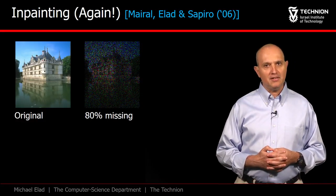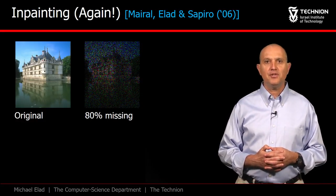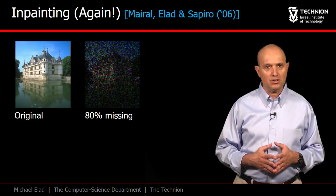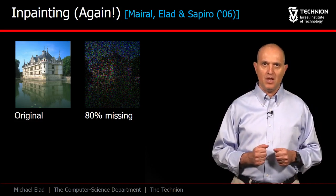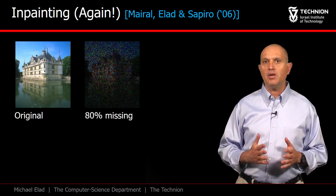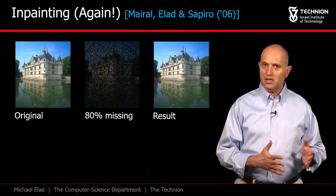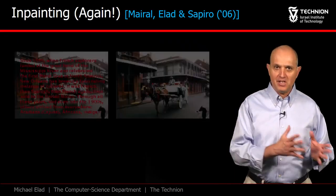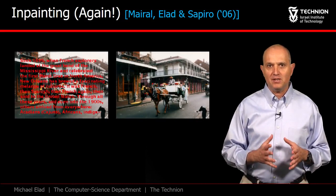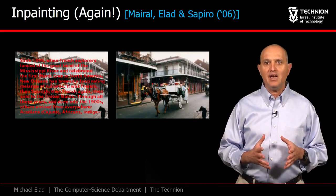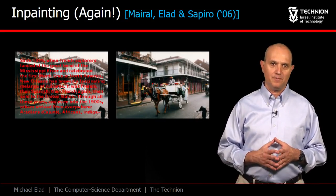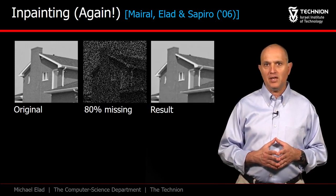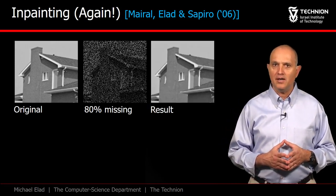We return to in-painting, but this time using learned dictionaries. The image shown here lost 80% of its content in random locations. We train the dictionary on the available pixels in this corrupted image, and the result is near perfect. Running the very same algorithm on a problem where the red pixels are defined as missing, again we get a near perfect recovery. All these results were obtained in a joint work with Julian Meiral and Guillermo Sapiro.